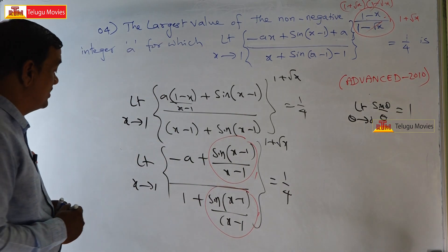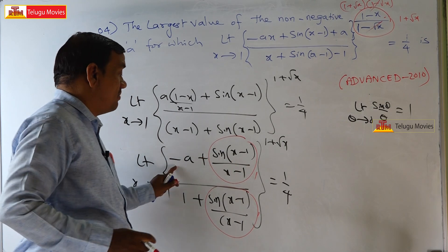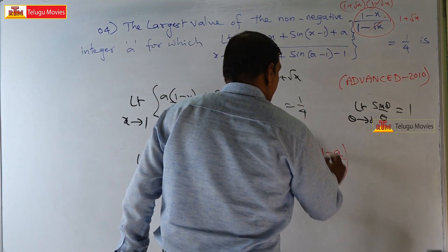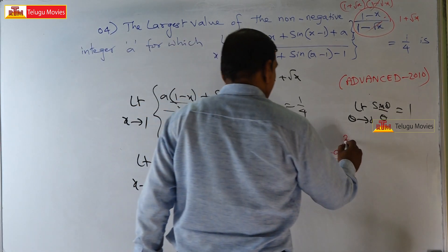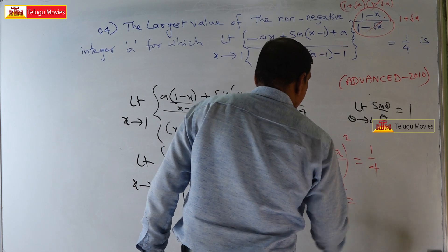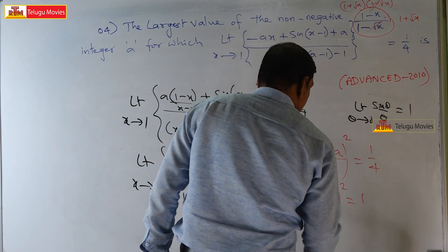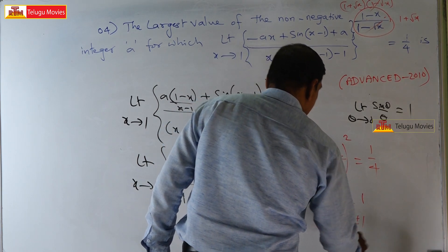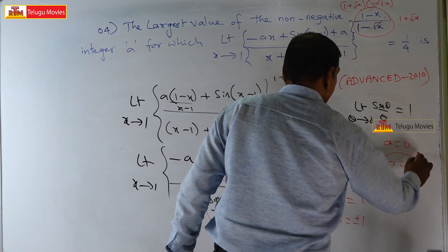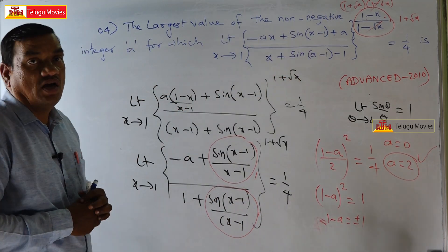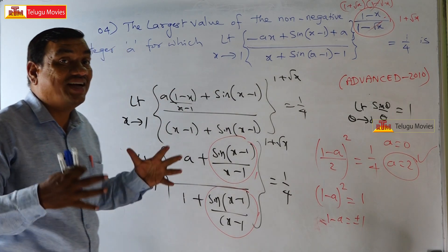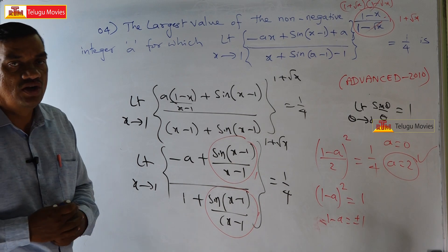So (1−a)² = 1. Solving: 1−a = ±1, giving a = 0 or a = 2. The largest value of a is 2. I hope you understand this solution. Let us go to the next problem.